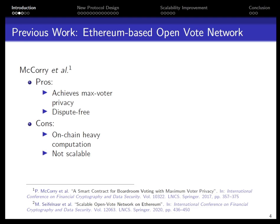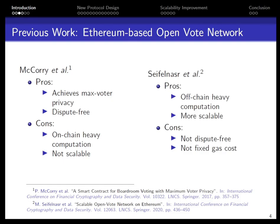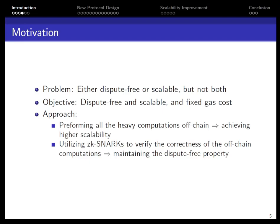There are two Ethereum-based implementations for the OpenVote network. The first, by Macquarie, maintains the dispute-free property. However, it has a scalability issue since all tallying computations are performed on-chain by the smart contract. The second implementation by SefenNAS solves this by assigning the tallying computation to an off-chain untrusted administrator in a verifiable manner, but as a side effect, there is a need for a tally dispute phase. So the two implementations are either dispute-free or scalable, but not both.